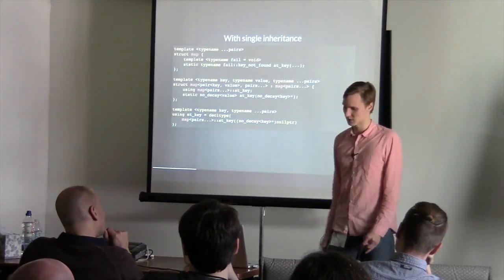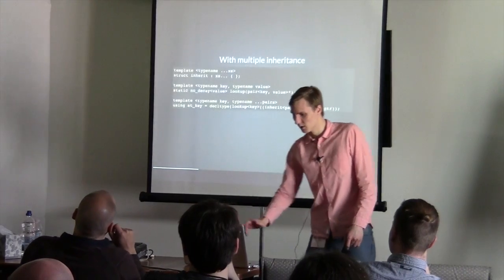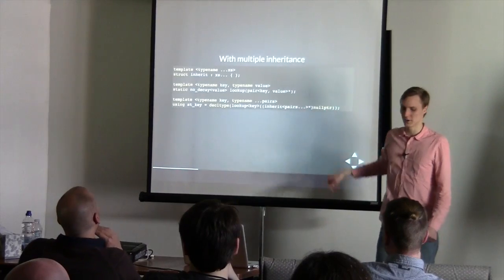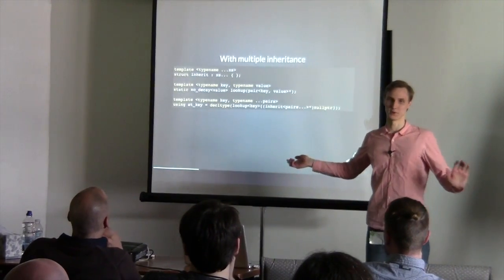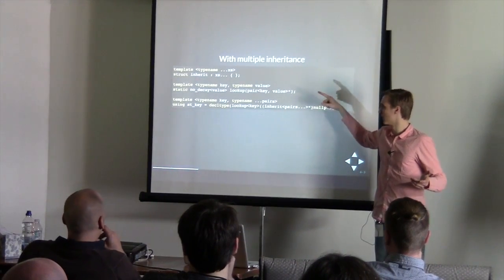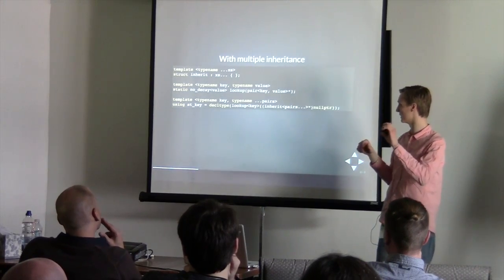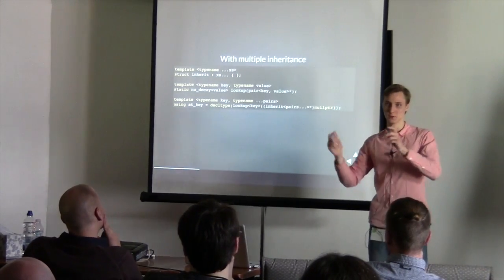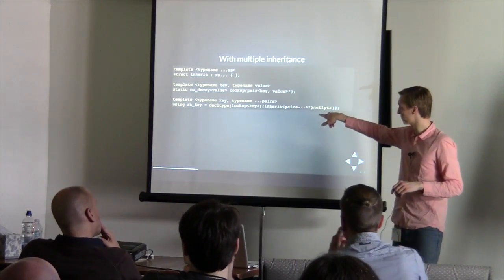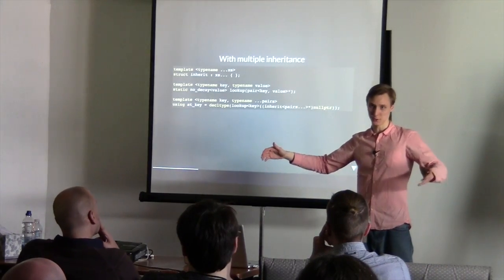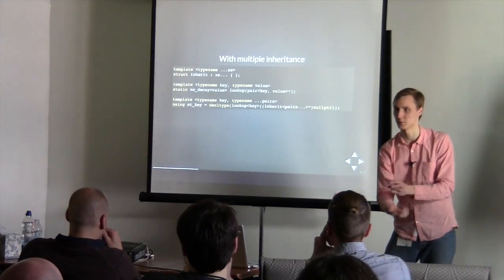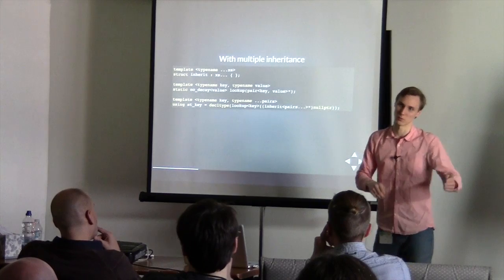That's the naive implementation. Now a less naive and simpler implementation. We need a helper, 'inner_it', which takes a lot of types and multiply-inherits from them. You create a function that associates a pair key-value to the value of the pair, inherit from all the pairs, and then use overload resolution to pick the right one — you try to convert to one of the pairs since you inherit from them, and pick which one matches.